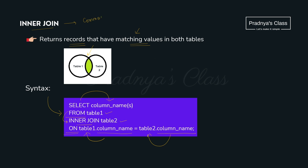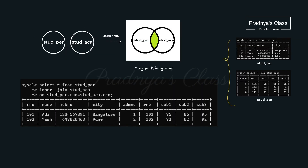For inner join, we need a common column in both tables. We kept roll number as the common column from the beginning so we can apply inner join on it. The query looks like this: select star from student personal — that is table one — then inner join students academics, followed by the on clause with the equal condition comparing the common column from table one to the column from table two.